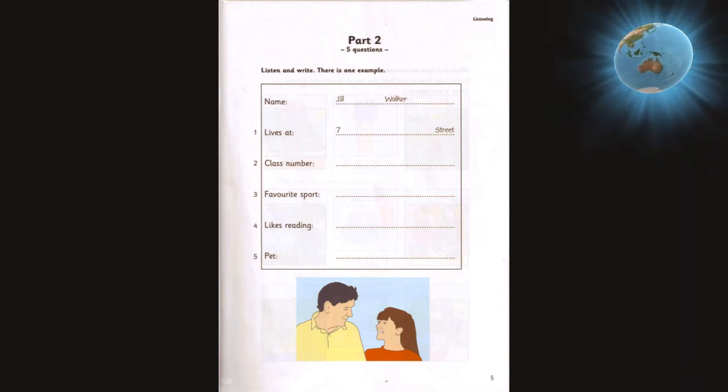One. Where do you live, Jill? I live at 7 Main Street. Can you spell that, please? Yes. M-A-I-N.